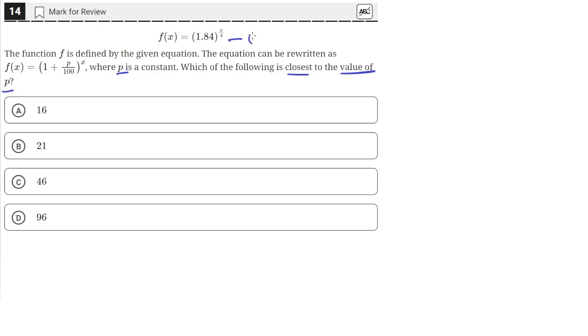So we're given this equation: f(x) equals 1.84 raised to the x over 4, and we're told that it can be rewritten as this second f(x) equation. The first thing we can notice is that the exponents are different. Here this value is raised to the x over 4 power, and here it's raised to just x.